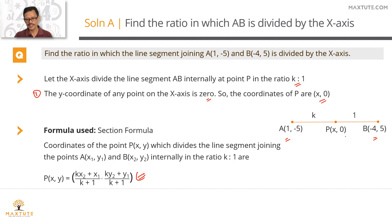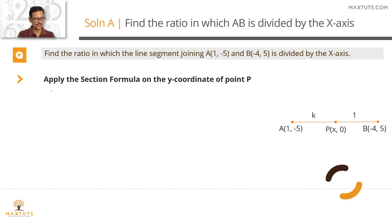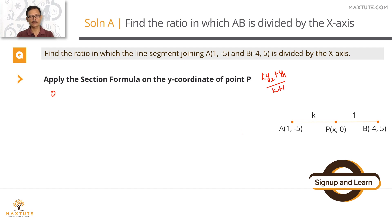We know the y-coordinate of point P, so we're going to take that y-coordinate and apply it in the section formula to find the value of k. That's step number one. The y-coordinate of point P is equal to zero. The section formula gives us: (k·y₂ + y₁) / (k + 1).